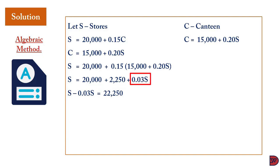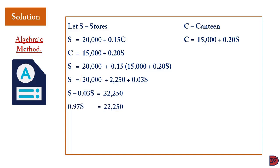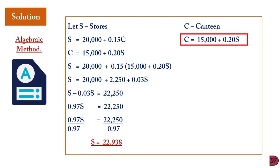Grouping like terms: S − 0.03S = 22,250, giving 0.97S = 22,250. Dividing both sides by 0.97, S = $22,938. Note that when an alphabet stands alone in mathematics, there is an implied coefficient of 1.